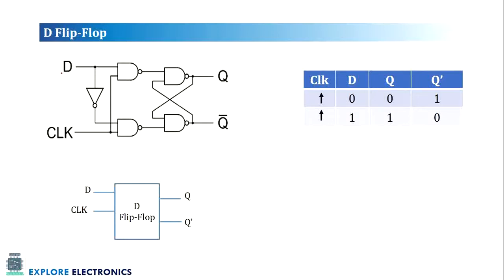Here D is the single input and clock will be same as I said in the previous case. When clock is at the positive edge of the clock, D is equal to 0, output Q becomes 0. And when D is 1, output will be 1. The output of this flip-flop Q is following D. If D is 0, Q becomes 0. If D is 1, Q becomes 1.